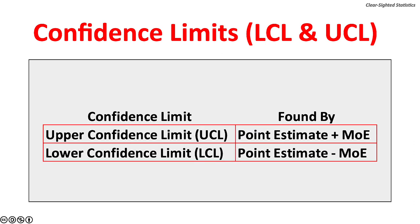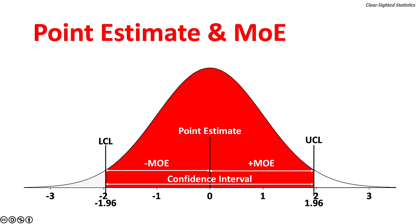The upper confidence limit is the point estimate plus the margin of error. The lower confidence limit is the point estimate minus the margin of error. This normal curve shows the relationship between the confidence interval, the point estimate, the margin of error, and the lower and upper confidence limits.